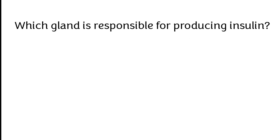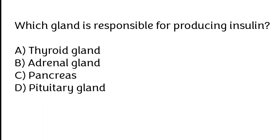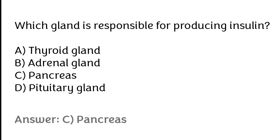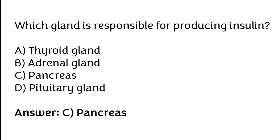Which gland is responsible for producing insulin? Thyroid gland, adrenal gland, pancreas, pituitary gland. The correct answer is option C: pancreas gland is responsible for producing insulin.